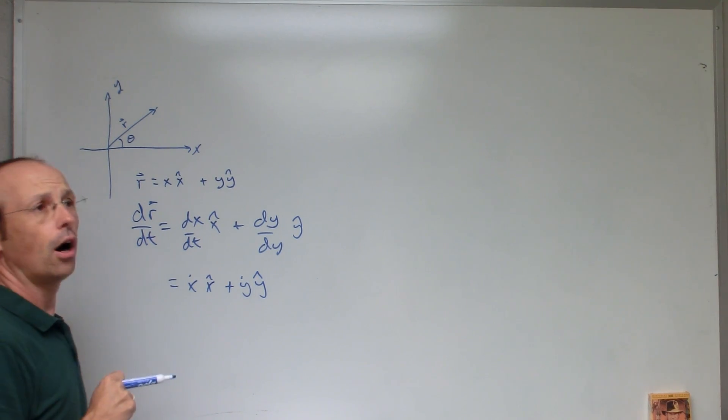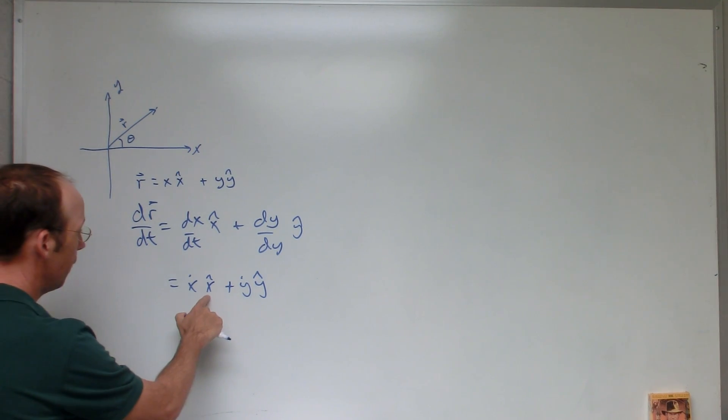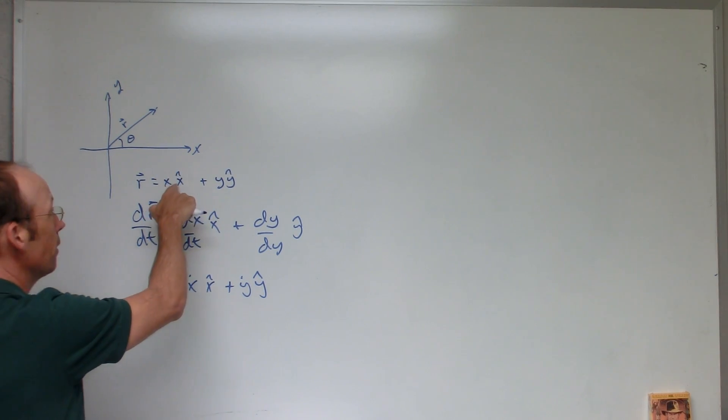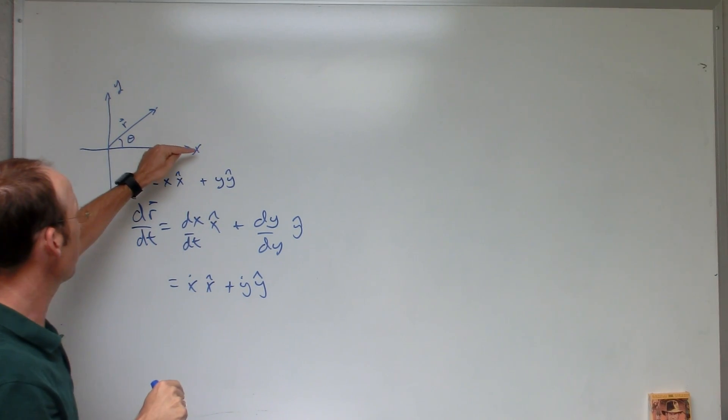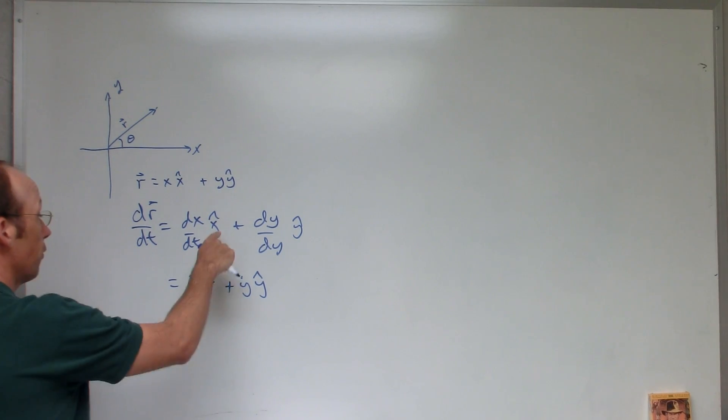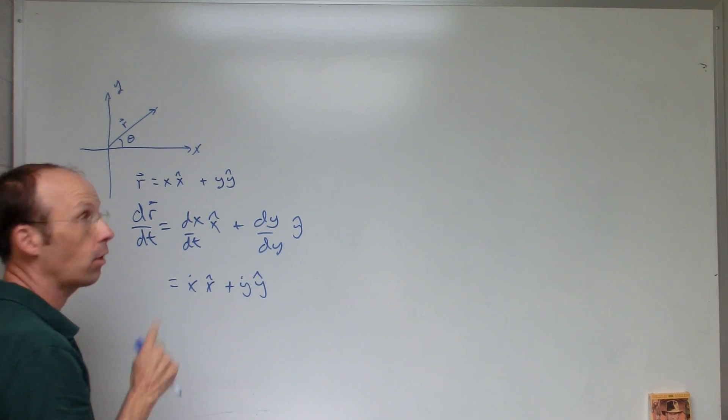Okay, but there's something here that we don't always look at. When I take the derivative of this, I actually have to take the derivative of x times x hat plus x times the derivative of x hat. But in Cartesian coordinates, the unit vectors don't change, so that would be zero. So those extra terms go away.